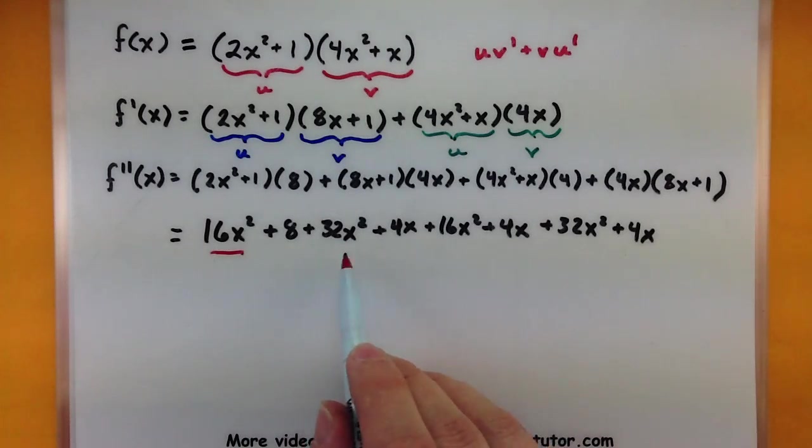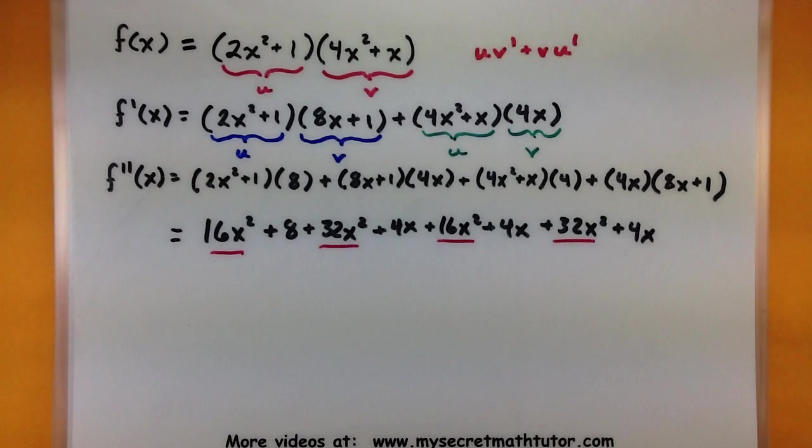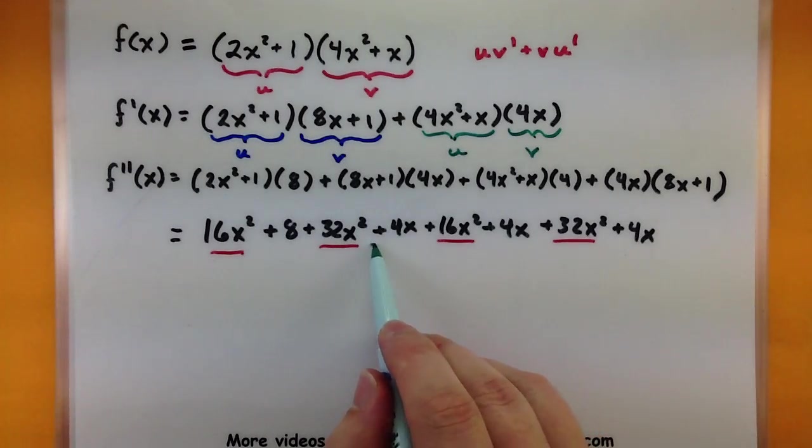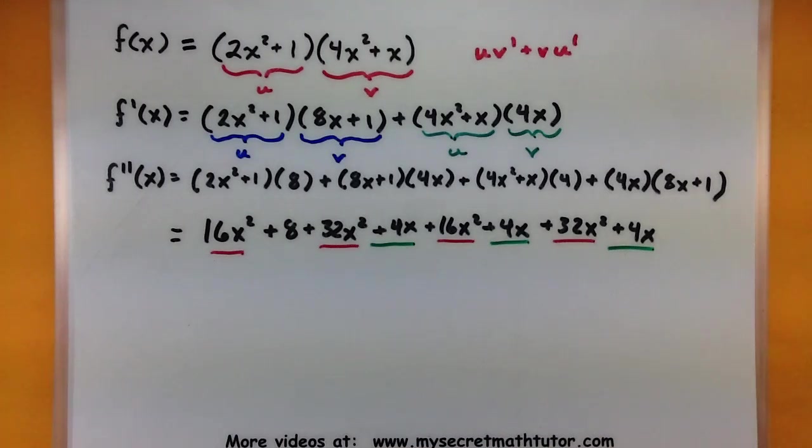Here are all of my x squareds. So we'll be sure to combine those ones. I also have some x's. We'll combine those ones. Looks like we have a single 8. So that will just be all by itself when we're all done.